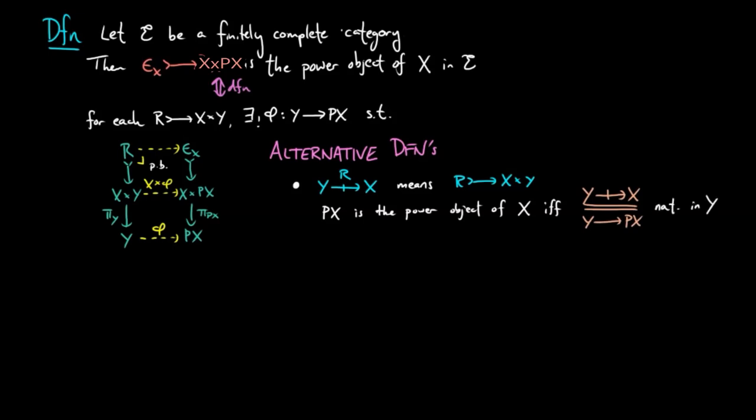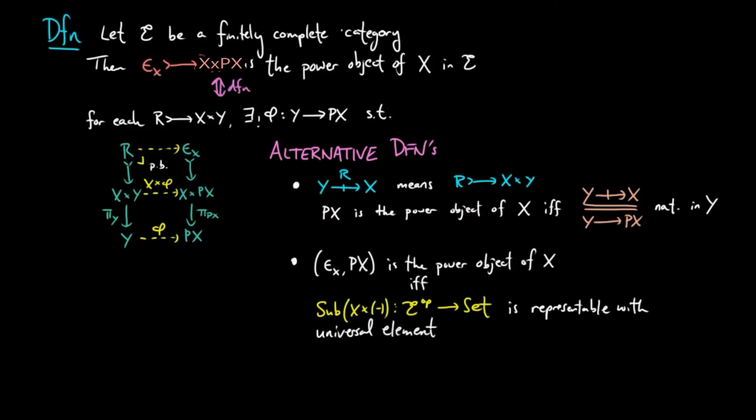We can also define power objects in terms of representable pre-sheaves. We say epsilon sub-X PX is a power object of X provided the following pre-sheave is representable with universal element epsilon sub-X PX, i.e. the identity on PX in E is taken to epsilon sub-X under the natural isomorphism.